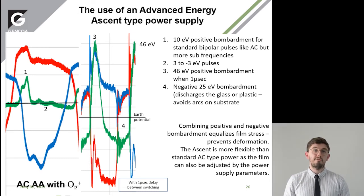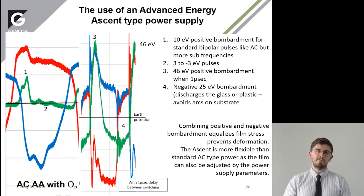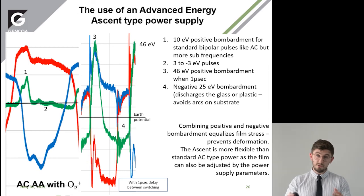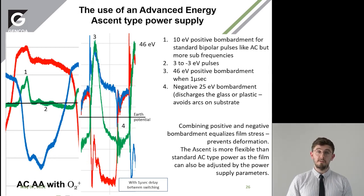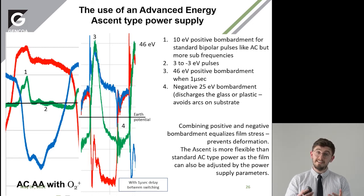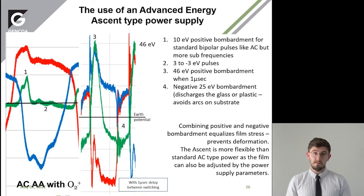We're getting now 46 eV at roughly 0.3, and then going down to minus 25 eV bombardment. We believe that combining both the positive and negative bombardment equalizes the film stress and helps prevent deformation. This gives an added benefit to the Ascent, as it's more flexible — we can add in this dead time and see this improvement in the pulse, with different pulse parameters which we can change.